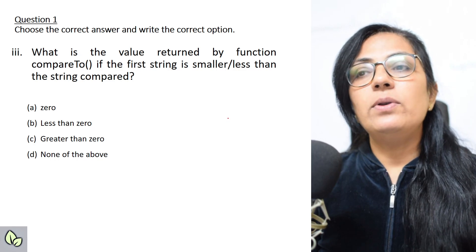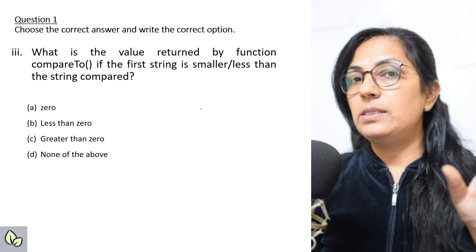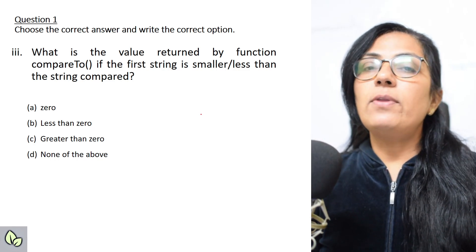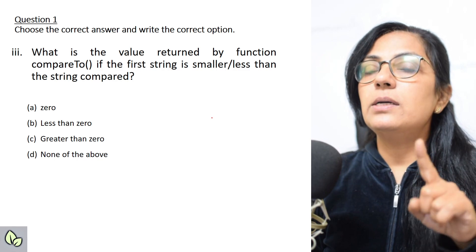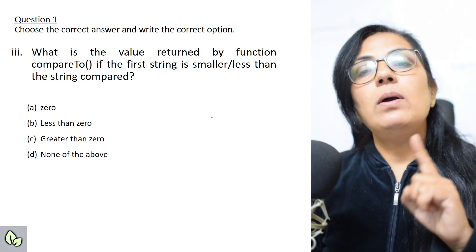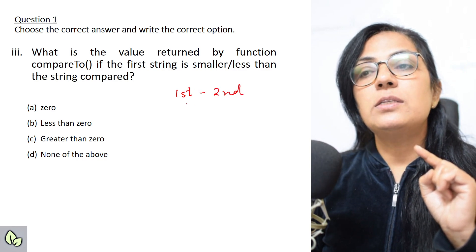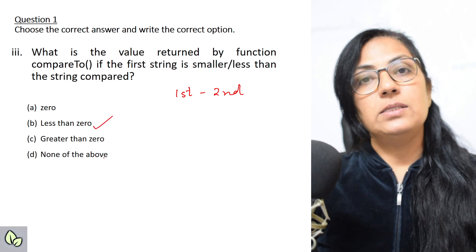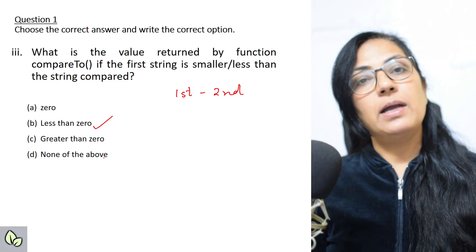What is the value returned by the compareTo() function if the first string is smaller than the string being compared? In compareTo(), one string is written before the function and one inside the bracket. The function always returns an int value: less than 0, greater than 0, or 0 if both are equal. It is always first minus second, so if the first is smaller, the result is negative — less than 0.